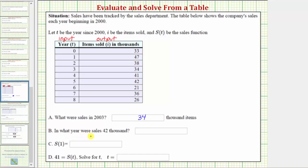Part b, we're asking what year were the sales forty-two thousand. So because now we're given the items sold in thousands, which should be the function output, we look for a value of forty-two in the second column. Notice how forty-two only occurs once in the second column here. And notice how when the number of items sold is forty-two thousand, t equals five.